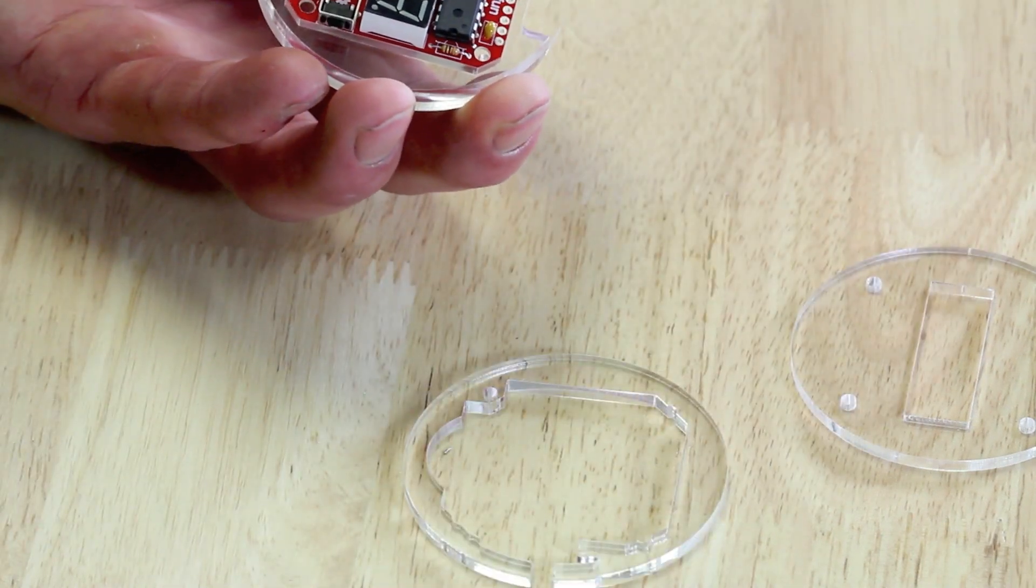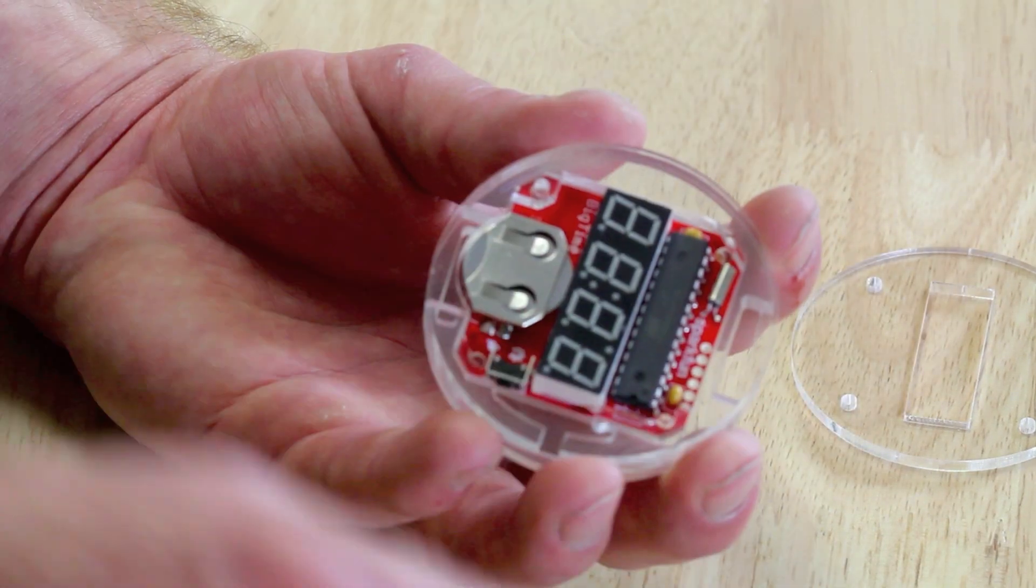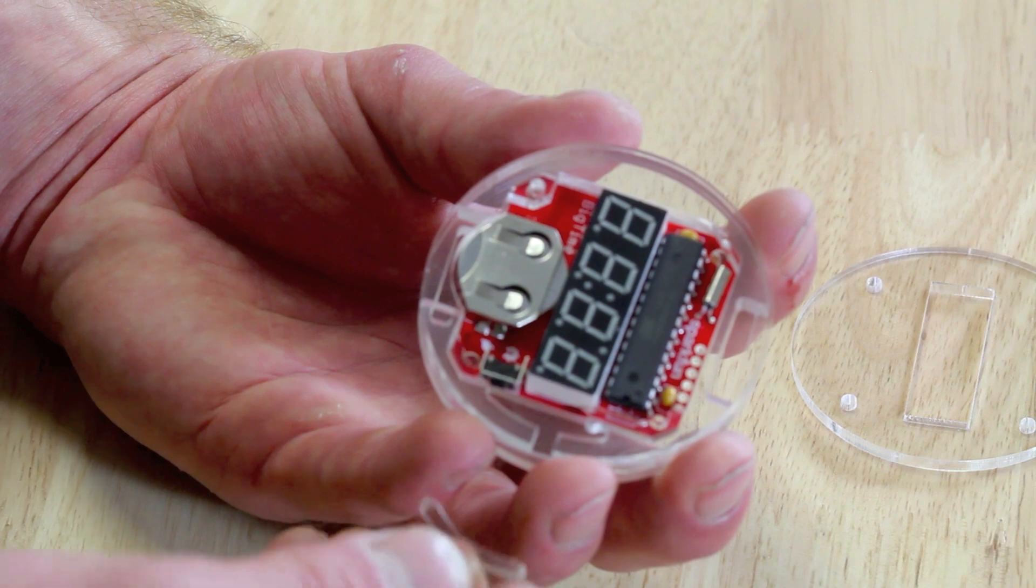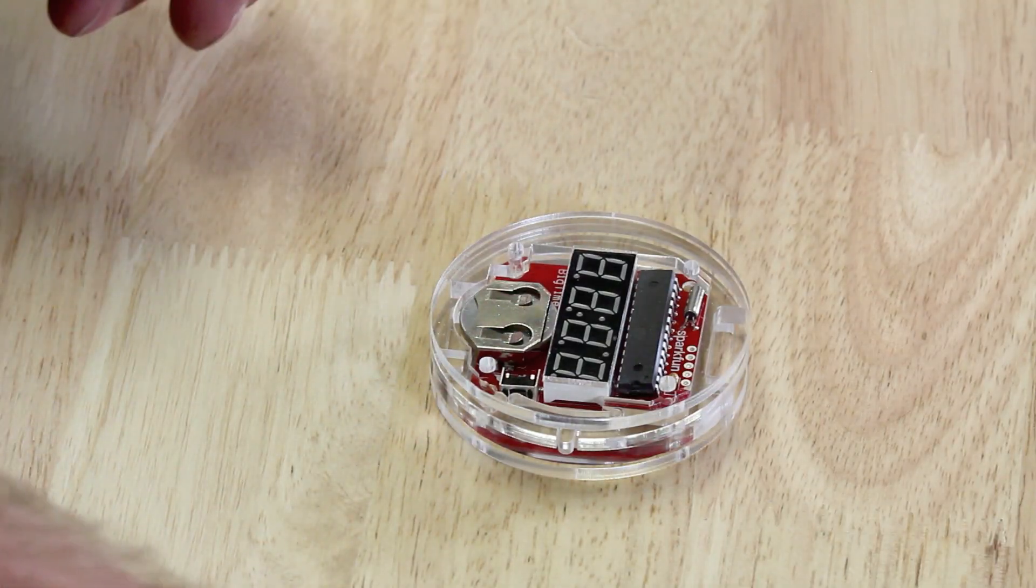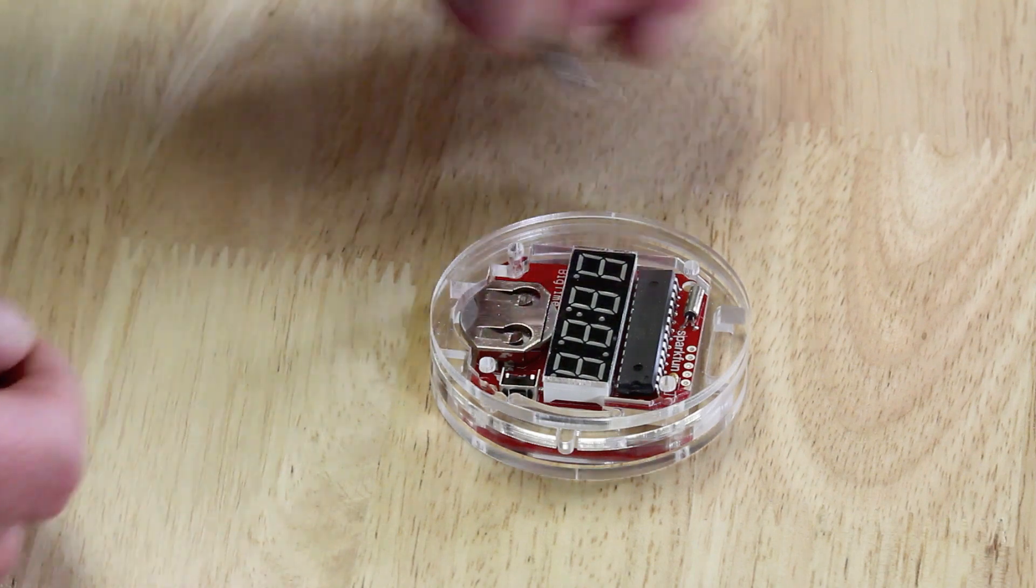The next piece is this funny looking guy. And once he's in place, with any luck, the switch should fit right in here with the notch at the top. Now that all the layers are together, I'm going to put the screws in place just to kind of keep everything together.